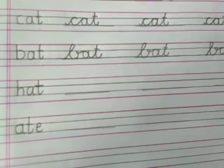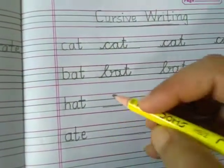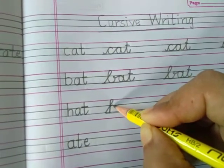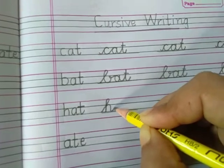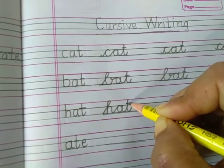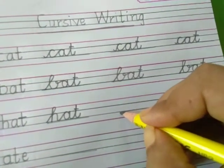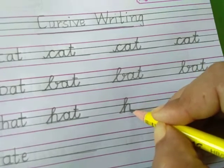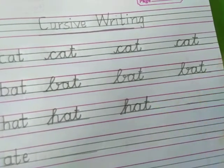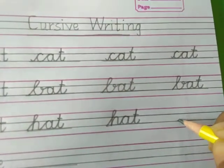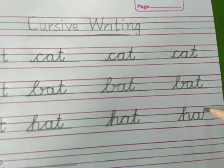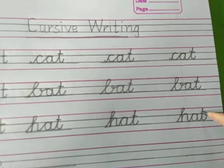Now we will write H, A, T — Hat. Yesterday you learned letter H. H is written like this: slanting up, standing down — H. Go a little up, H is completed. Now A, then T — H, A, T — Hat. Again: H, A, T — Hat. One more time: H, A, T — Hat.